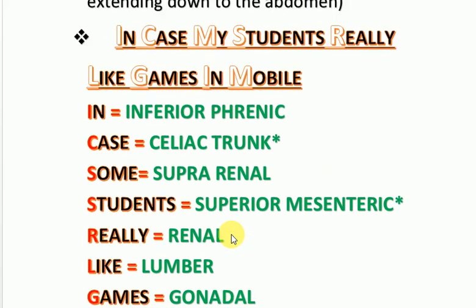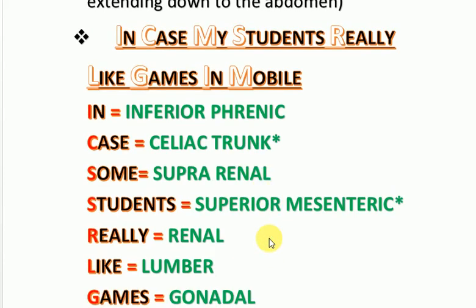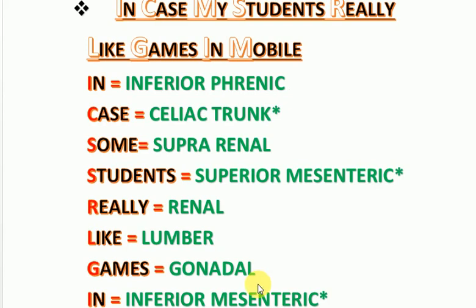All of these arteries are paired, except the celiac trunk, superior mesenteric artery, and inferior mesenteric artery — these three are unpaired.